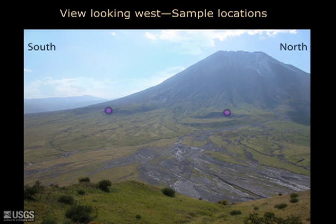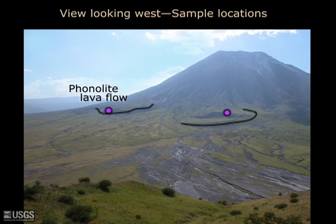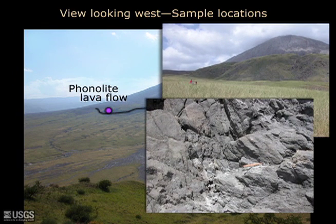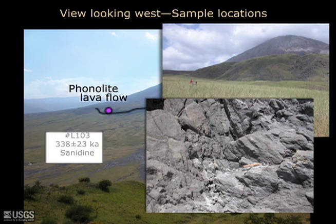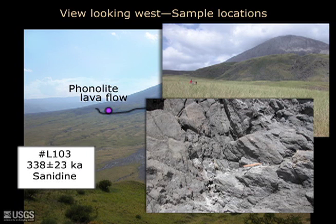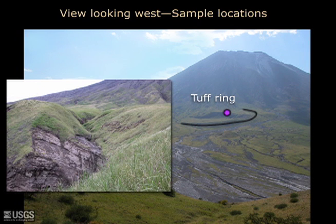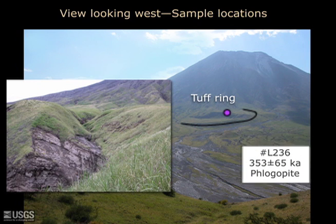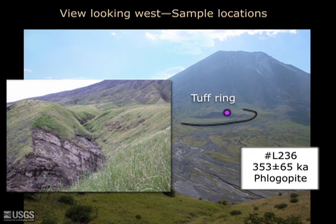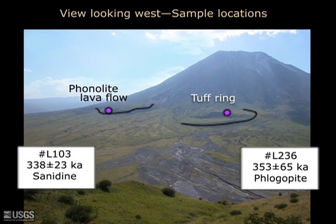This oblique photo shows two sample locations. Using the Argon 40/39 isotopic method, we successfully dated potassic feldspar sanidine from a phonolitic lava flow on the southeast flank — age 338,000 years. Another age came from a tuff ring just 1.5 kilometers to the north, also on the southeast flank. The age is 353,000 years, obtained from phlogopite mica collected from juvenile magmatic lapilli in the tuff ring. The tuff ring and phonolite lava flow are at about the same topographic altitude and roughly similar in stratigraphic position, so their similar ages are unsurprising.